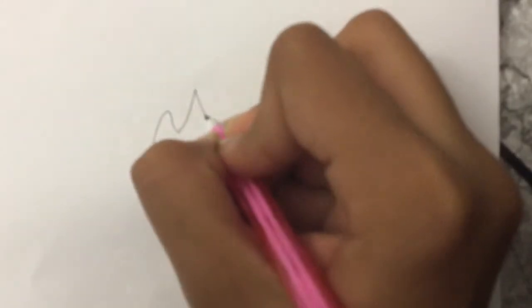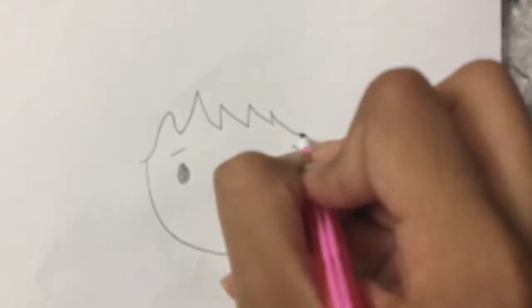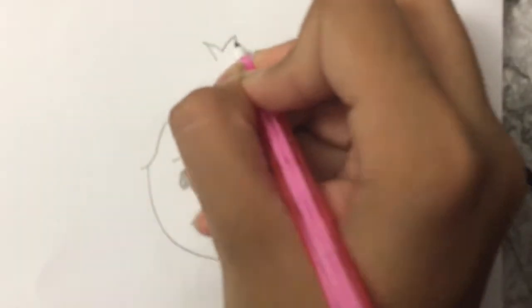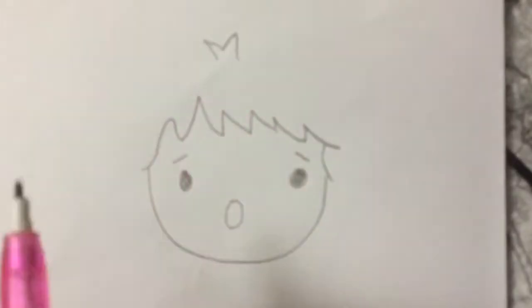And we're gonna draw another curve like that. And now we're gonna go up and draw this leaf looking shape, and then we're just gonna go down and we're gonna draw another curve and come down.